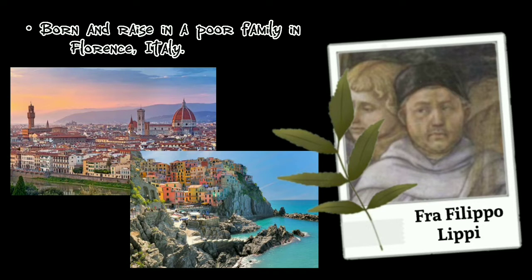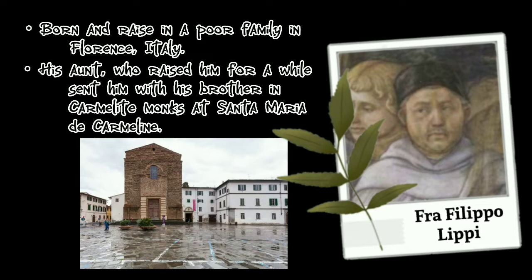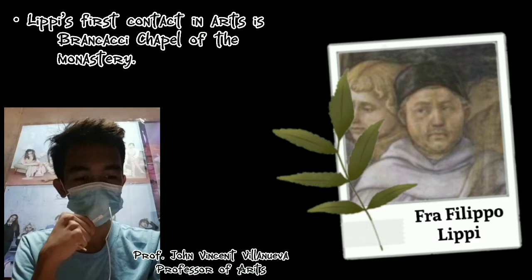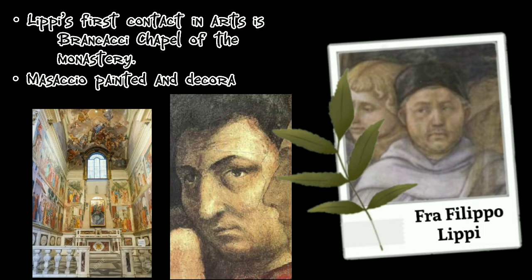Fra Filippo Lippi was born and raised in a very poor family in Florence, but after the death of his parents, his aunt raised him for some years. But later, his aunt sent him with his brother to a convent of the Carmelite monks at Santa Maria del Carmine. The first foundation of his development in arts is in the Brancacci Chapel, the monastery, wherein during that time Masaccio painted and decorated it with frescoes.